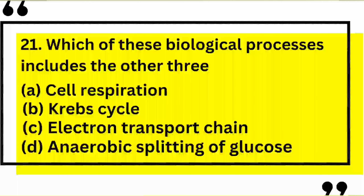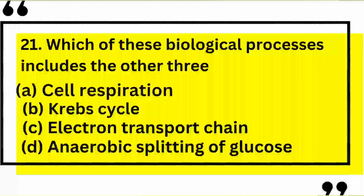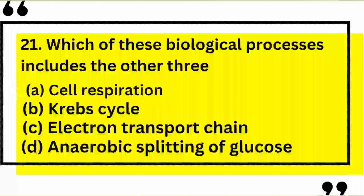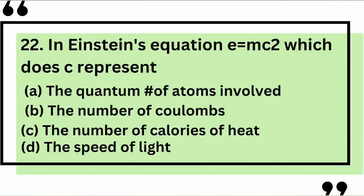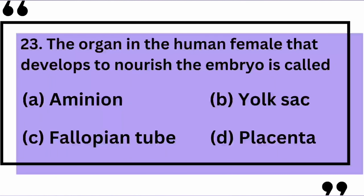Which of these biological processes includes the other three? Yes, the correct answer is A: cell respiration. In Einstein's equation E = mc², what does C represent? Yes, the correct answer is D: the speed of light. The organ in the human female that develops to nourish the embryo is called — the correct answer is D: placenta.